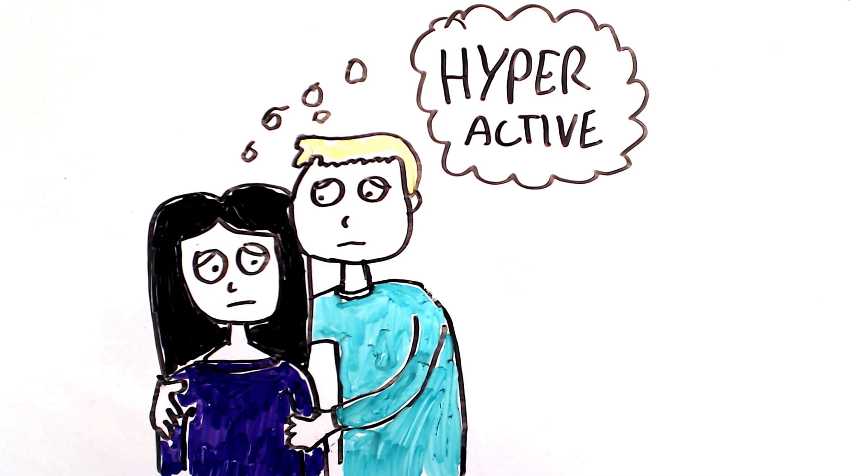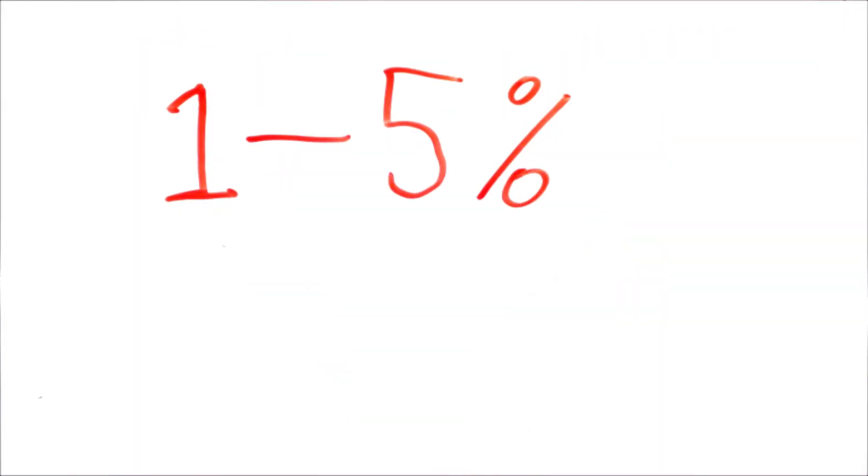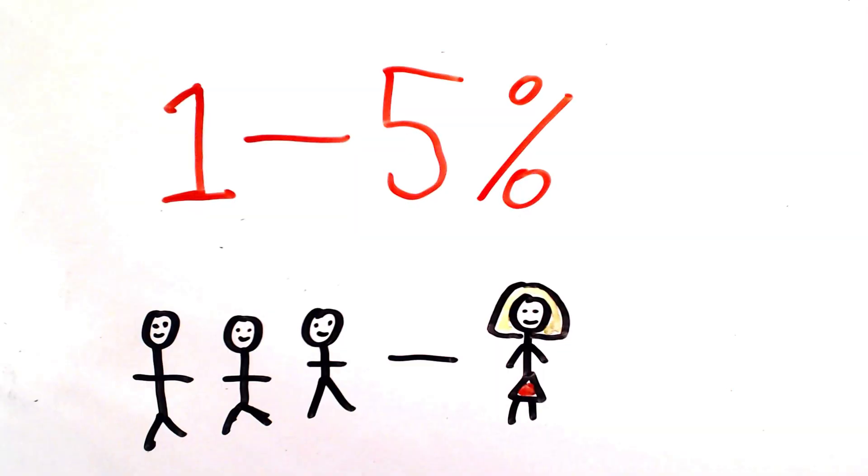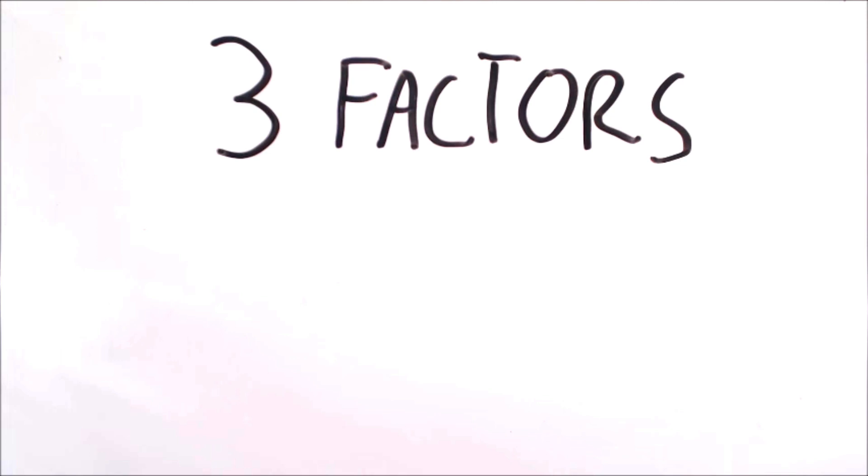ADHD is thought to affect about 1-5% of children, with boys being 3 times as likely to have the condition than girls. Despite it being the most commonly studied mental disorder in children, very little is known about what causes it. But there are three factors that have been related to its occurrence.